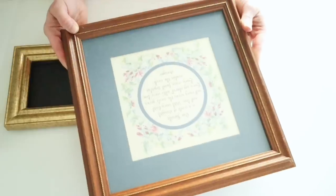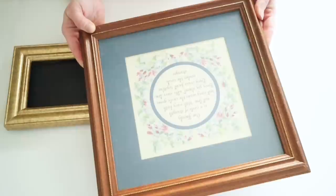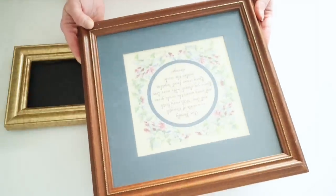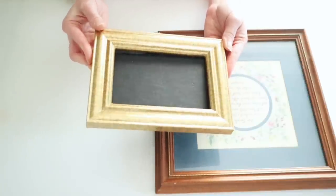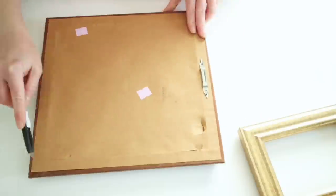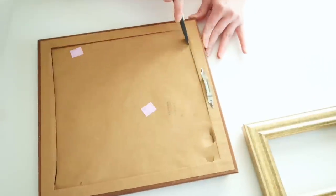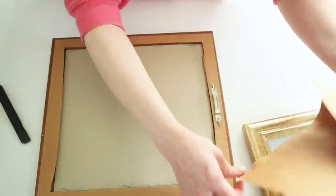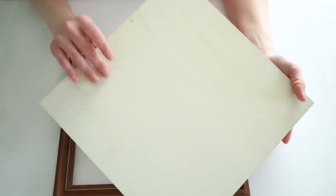For this first project, I wanted to make a layered frame, but I didn't want it to be permanent because I love to change out my art and decor. I picked up this 12 by 12 frame and a 4 by 6 frame. I took apart the 12 by 12 frame and removed everything from inside. Then I'm also going to be using this basswood from Amazon.